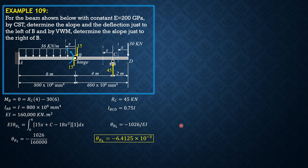For the deflection at B, we can apply it just to the right or just to the left — it doesn't matter, because although that's a hinge, the movement of the internal hinge will be the same. Let's apply it just to the left so that the reaction here will not be a function of B. In evaluating delta_B, we only consider this section because the moment equations in the other sections are not functions of B, so those integrals are zero.